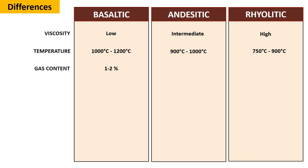Regarding gas content, basaltic magma contains the lowest gas content, ranging from 1 to 2 percent. Acidic magma has moderate gas content, typically around 3 to 4 percent. Rhyolitic magma possesses the highest gas content at 4 to 6 percent. For silica content, basaltic magma contains roughly 50 percent, marking the lowest level.